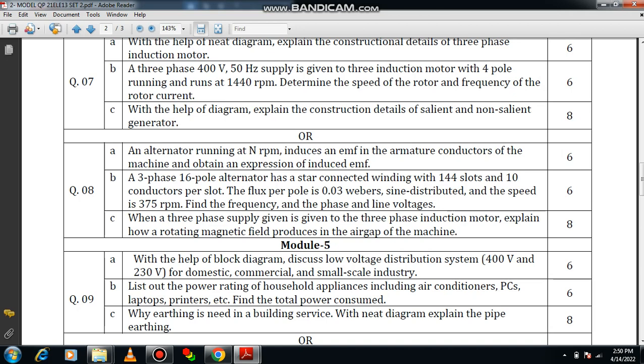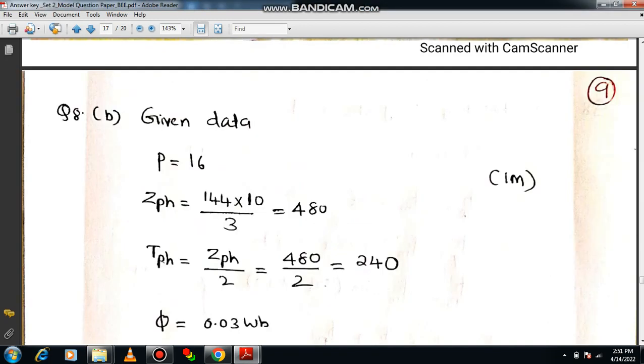Kindly read out question number 8b. A 3 phase 16 pole alternator has a star conducted winding with 144 slots and 10 conductors per slot. The flux per pole is 0.03 weber, sine distributed, and the speed is 375 rpm. The frequency, the phase and line voltages are to be calculated. The weightage is 6. First I request everyone to recall the concept of alternator and you should know the equation for EMF. We already derived this in question number 8a. The question has been repeated based on the derivation of EMF equation. So the same equation needs to be recalled.